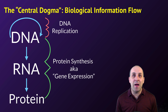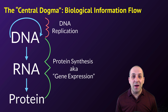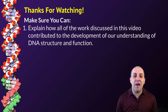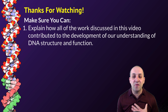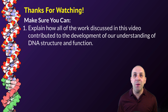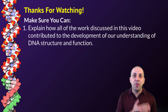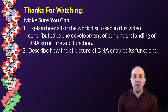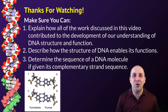This is our modern understanding of how the biological information system works — the central dogma: DNA is copied into RNA, and RNA is then used to drive the production of proteins. In the rest of this unit, we're going to examine these processes in more depth. Make sure you can explain how all of the work discussed contributed to our understanding of DNA's structure and function, seeing a clear line from Mendel to Watson and Crick. You should also be able to describe how the structure of DNA enables its functions, and if given the sequence of a DNA strand, determine the sequence of the opposite strand using the base pairing rules.